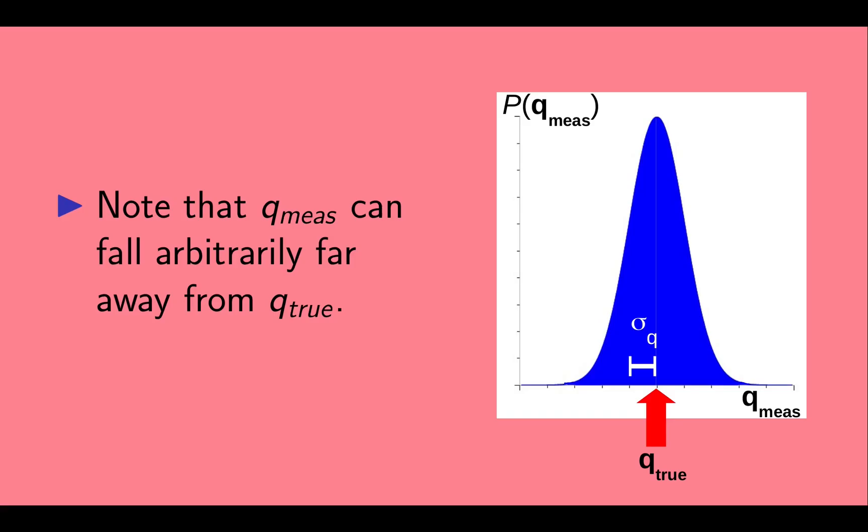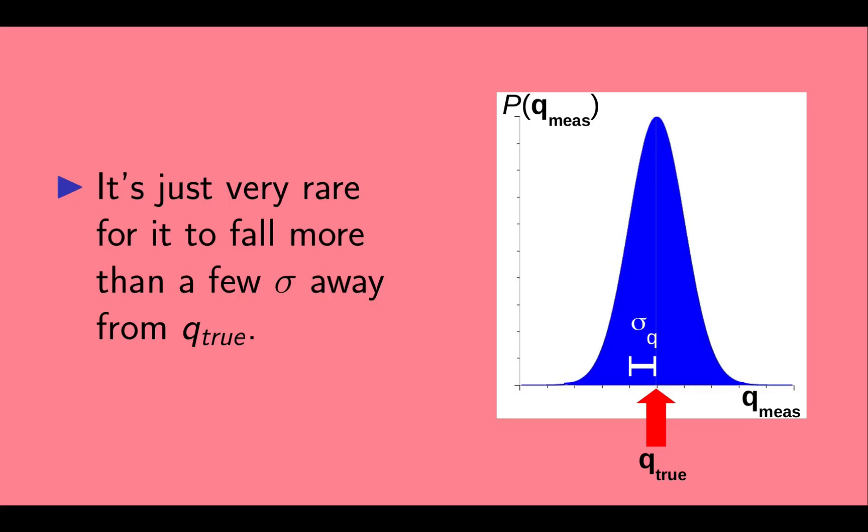Note that q measured can fall arbitrarily far away from q true. It's just very rare for it to fall more than a few sigma away from q true.